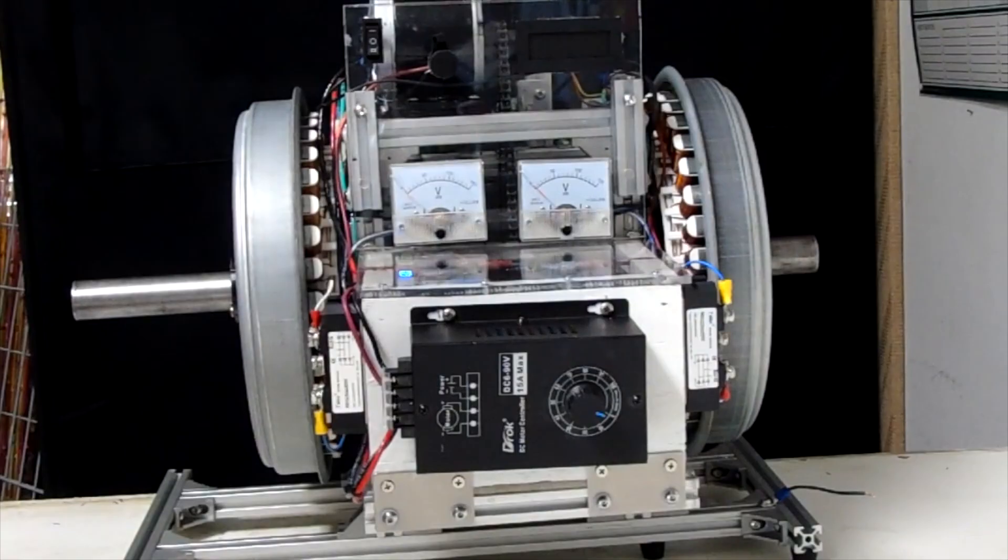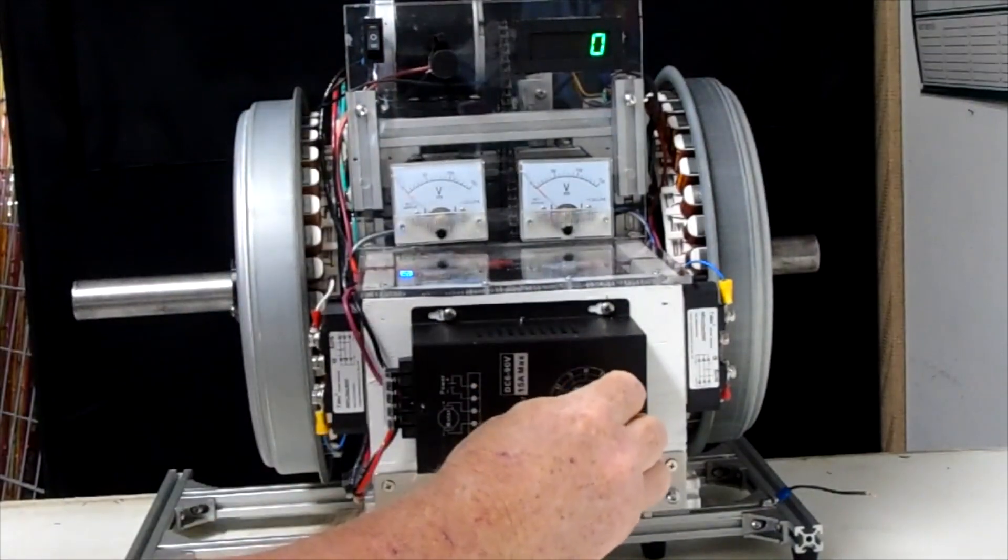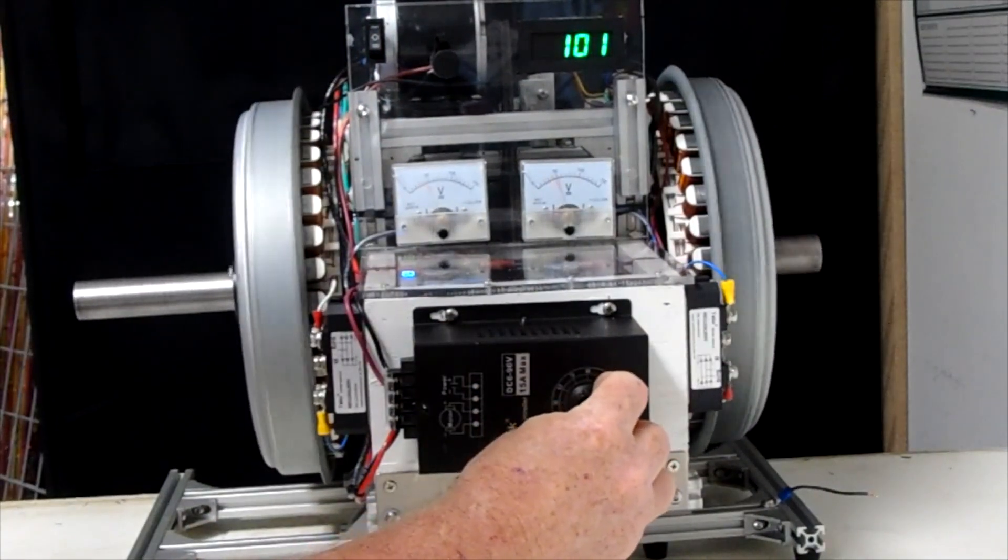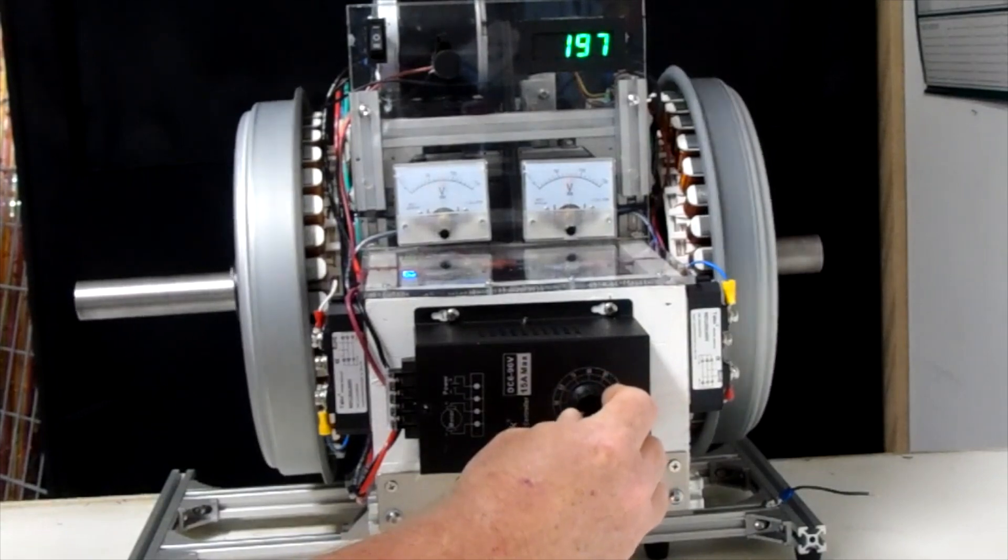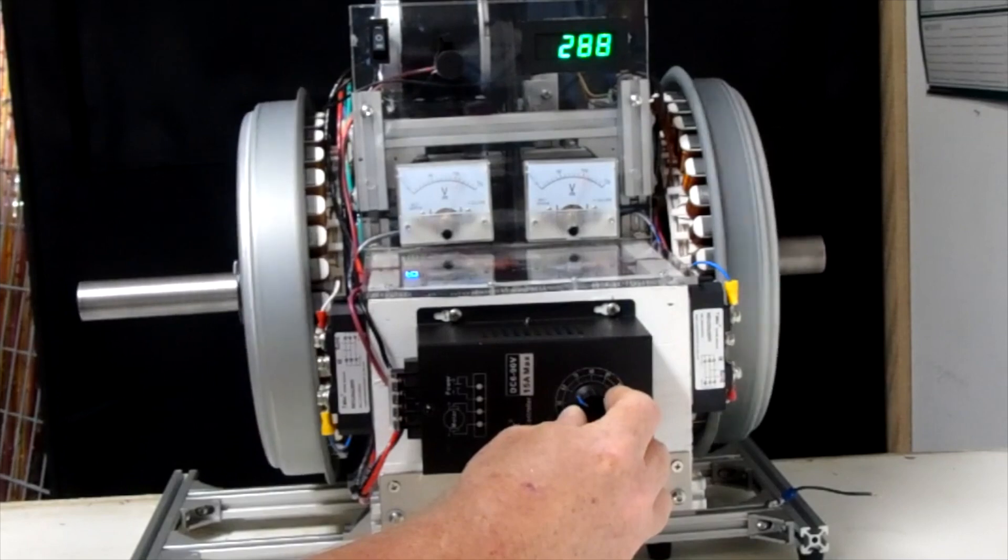The test bed was constructed with plywood, acrylic, and T-slot aluminum. It included a hall sensor tachometer, twin 150 volt DC gauges connected to the output of two rectifiers, a DC motor controller, and a couple 12 volt scooter batteries.